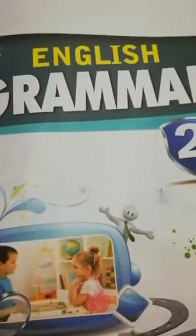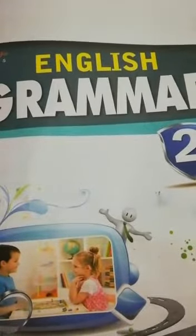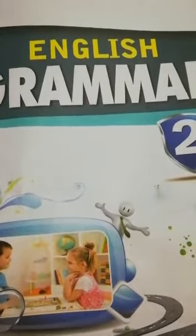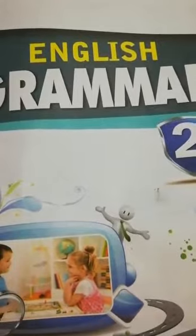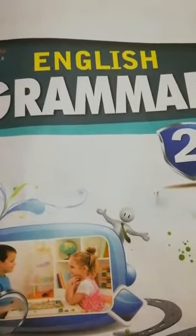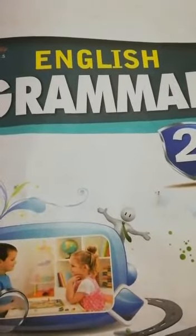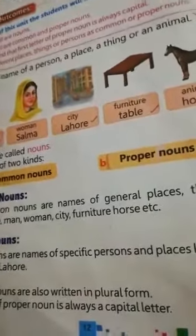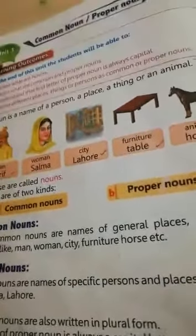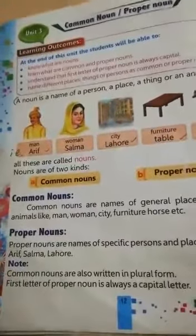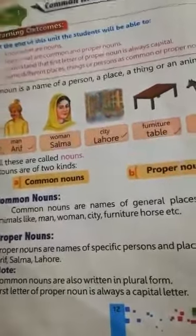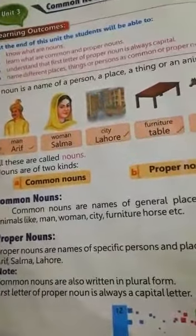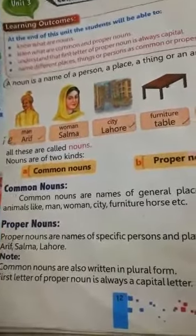بسم اللہ الرحمن الرحیم. Dear students, السلام علیکم. Hope you are all right. Now let's start our English B lesson. Page number 12 ہے، unit number 3 ہے۔ Last unit میں ہم noun کے بارے میں پڑھ چکے ہیں۔ Noun is the name of a person, place, or a thing.